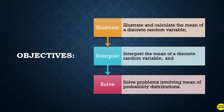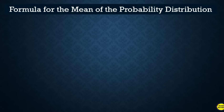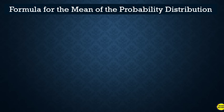And solve problems involving the mean of probability distributions. Recall from the previous video lesson, we discussed how to construct the probability distribution of a discrete probability distribution, and how to identify whether a given distribution is a discrete probability distribution. We also constructed a histogram, so we will continue that discussion here by computing the mean of the probability distribution we obtained.